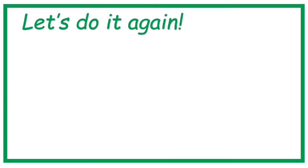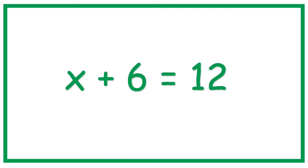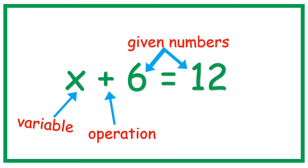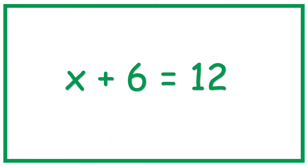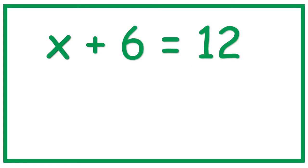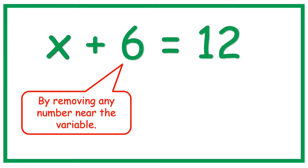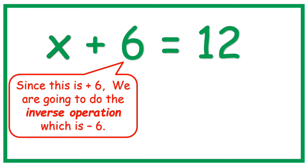Let's do it again. X plus 6 equals 12. Again, we have the variable, the operation, and the given numbers, and we have the equal sign. X plus 6 equals 12. Again, we need to isolate the variable — by removing any number near the variable. Since this is plus 6, we are going to do the inverse operation which is minus 6.